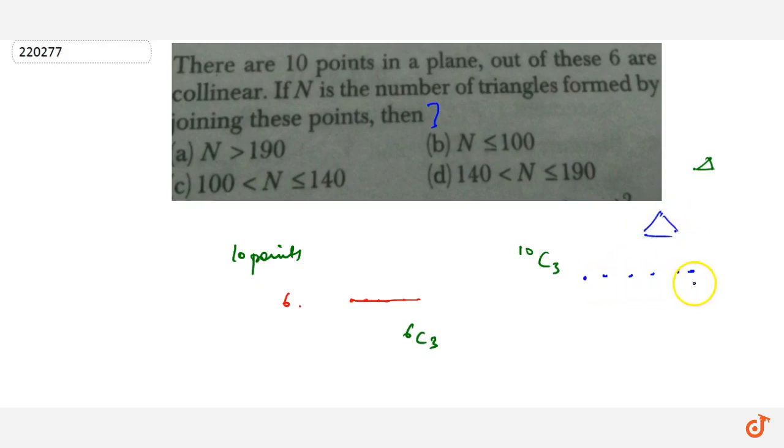Now we have a triangle, but here we have 3, so what do we do? We have total cases - from the 10 points, how many triangles can be made? We have to minus the cases which use these collinear points, which cannot form these triangles.